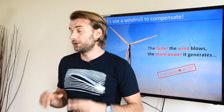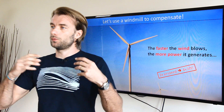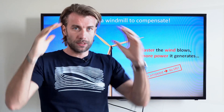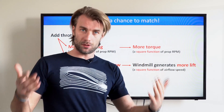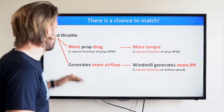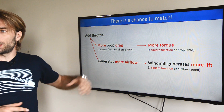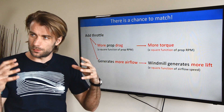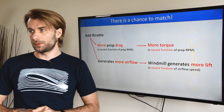There is a simple solution you are all familiar with — the windmill — because the faster the wind blows, the more power, the more lift the windmill generates. If we could build the cage of the paramotor in the shape of the windmill, we could actually compensate for torque. If you add power and increase the RPM of the propeller, the prop will have much higher drag, leading to higher torque. At the same time, the prop generates a lot more airflow, so the windmill built into the cage creates a lot more lift — a lot more compensating force.